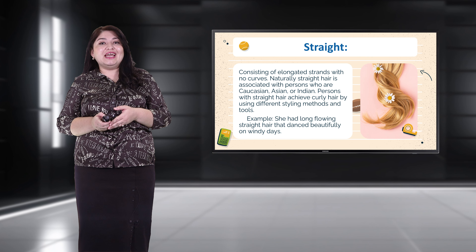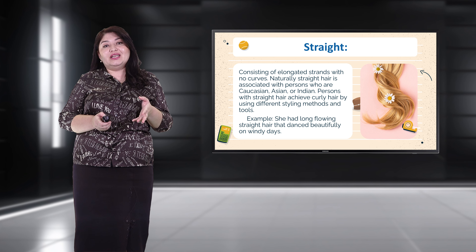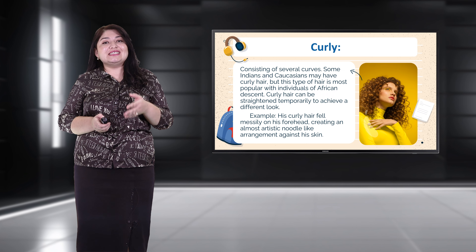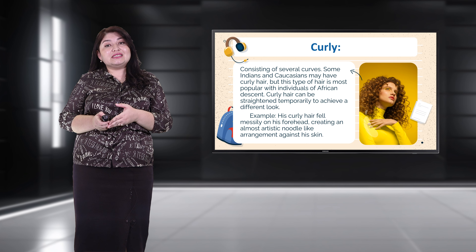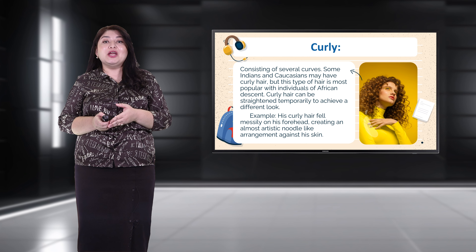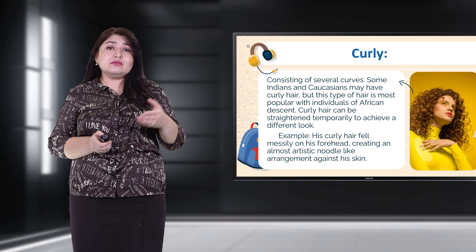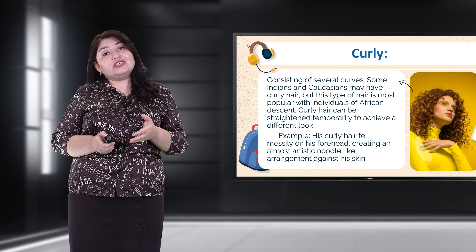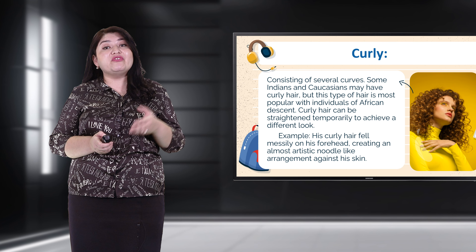Example: 'She had long flowing straight hair that danced beautifully on windy days.' Curly — consisting of several curves. Some Indians and Caucasians may have curly hair, but this type of hair is most popular with individuals of African descent. Curly hair can be straightened temporarily to achieve a different look. Example: 'His curly hair fell messily on his forehead, creating an almost artistic noodle-like arrangement against his skin.'